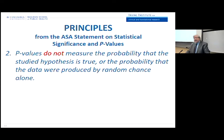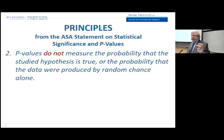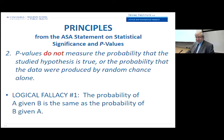Principle number two: p-values do not measure the probability that the studied hypothesis is true, or the probability that the data were produced by random chance alone. This is one of the most common pitfalls. You get a p-value less than 0.05 and immediately want to say that means the probability that the null hypothesis is true is less than 0.05. I'm here to tell you nothing could be further from the truth — this is a logical fallacy, one of two I'll discuss.